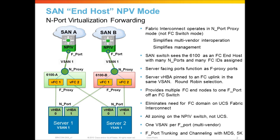With end host mode for fiber channel, you have the very same pinning type of model that we had with Ethernet. In this example, I've got server 1 and server 2 with a pair of VHBAs with their virtual cables going to their virtual fiber channel ports on the fabric interconnect. All of that was dynamically provisioned. Both of these VHBAs have been placed in vSAN 1, so I've got both servers in vSAN 1. Now all I need to do is provision an uplink out of the fabric interconnect, place that uplink in vSAN 1, and attach that to an F port on the upstream SAN switch.